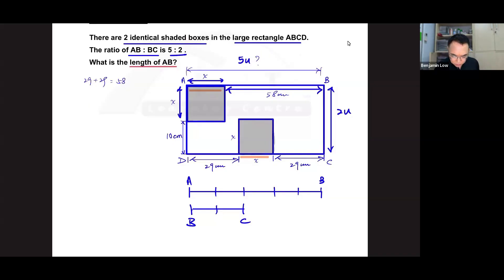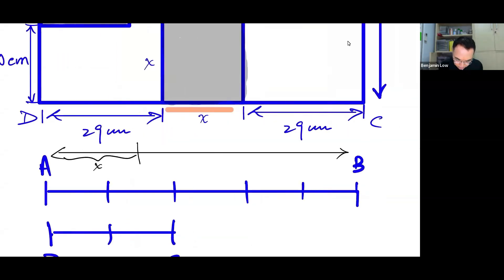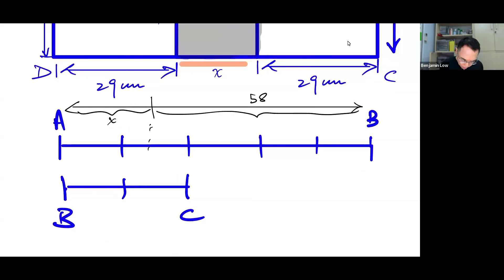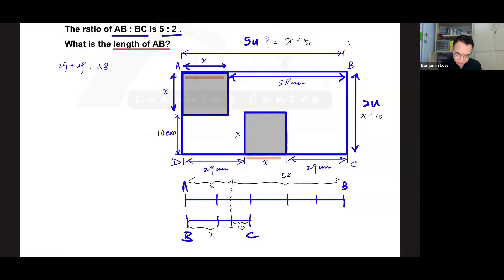Now, this line on top is made up of two parts. Okay, it is made up of one part, which is x, and another part, which is the 58. The line below is made up also of x. But the other portion is 10. This is your BC, right? Because 2 units is x plus 10, and 5 units is x plus 58. Okay?